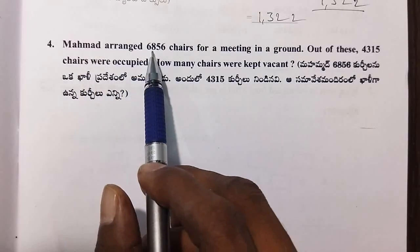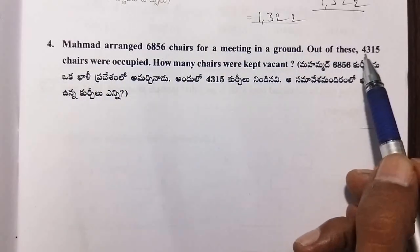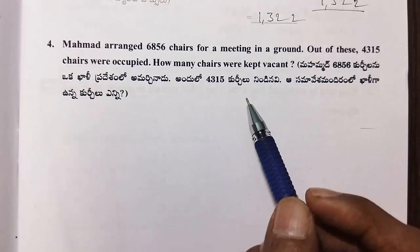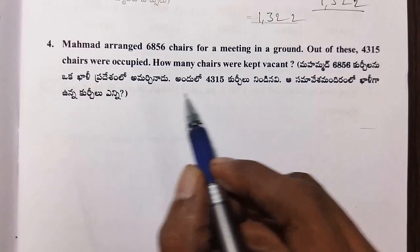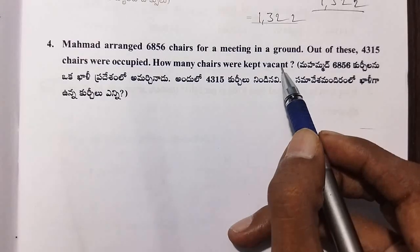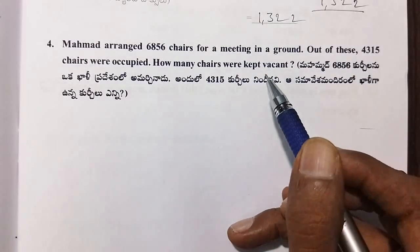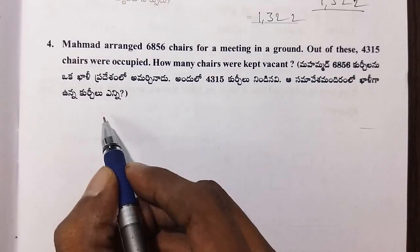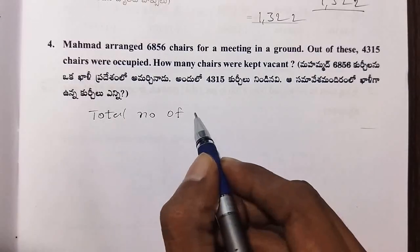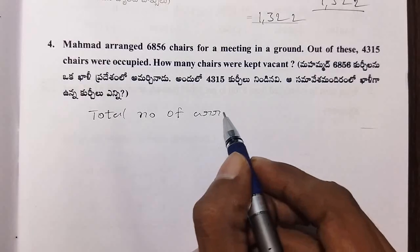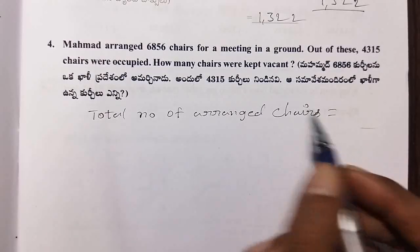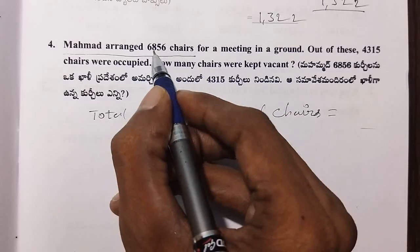Muhammad arranged 6,856 chairs for a meeting in the ground. Out of these, 4,350 chairs were occupied. How many chairs were kept vacant? The total number of arranged chairs is 6,856.